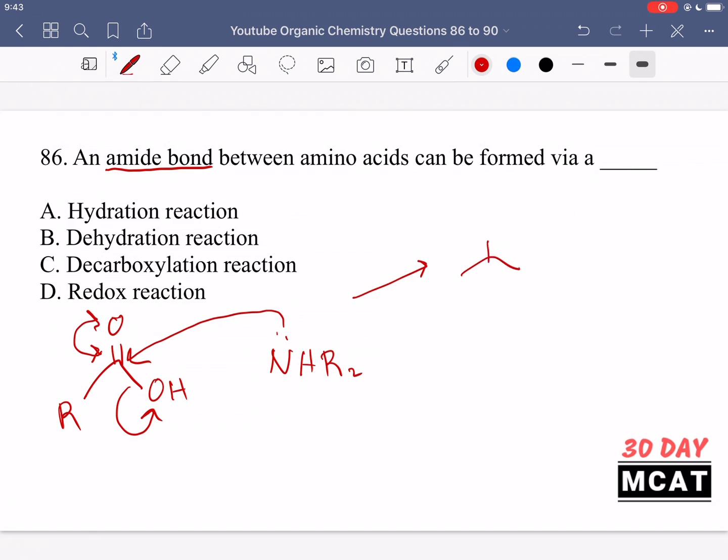What we end up getting is an amide or peptide bond plus our byproduct which is water that originally came from the carboxylic acid. So what happened is we produced water as a result of this reaction, that's called a condensation or dehydration reaction. So B is the correct answer.